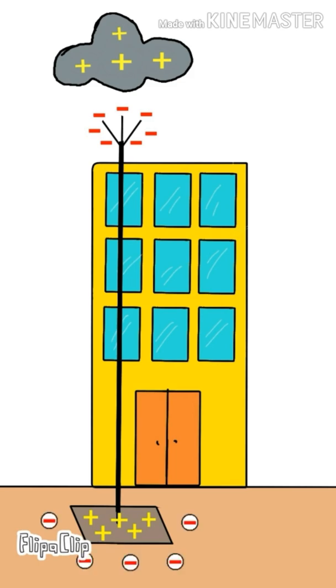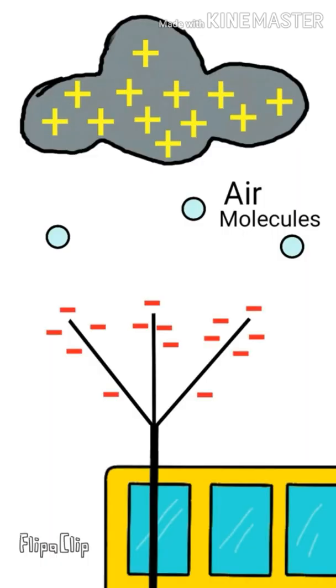Now since the positively charged plate is under the ground and ground has a surplus of electrons, the plate will take electrons from the ground and becomes neutralized. Let's go to the top end.